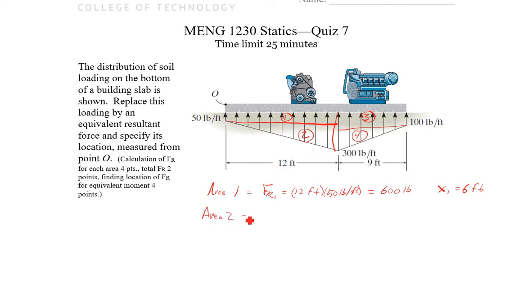Area two. So FR2 is going to be one half my base times my height. So I'm going to have one half, 12 feet. My height here now is 300 pounds per foot subtract 50 pounds per foot, so I'm going to have 250 pounds per foot. So I get six times 250, that gives me 1,500 pounds. And X2, it's going to be acting closer to the higher side, one third from there. So X2 is going to be two thirds of this value. So dividing 12 by three gets us four. It's going to be eight feet from O.